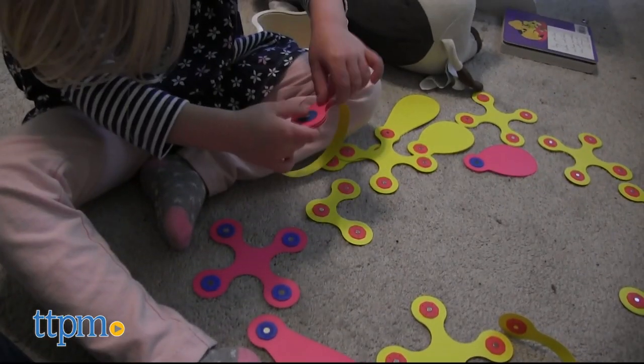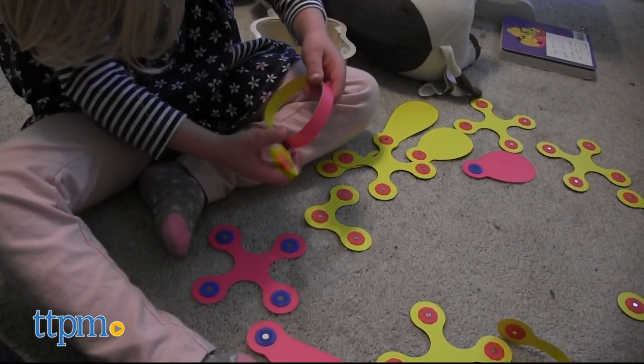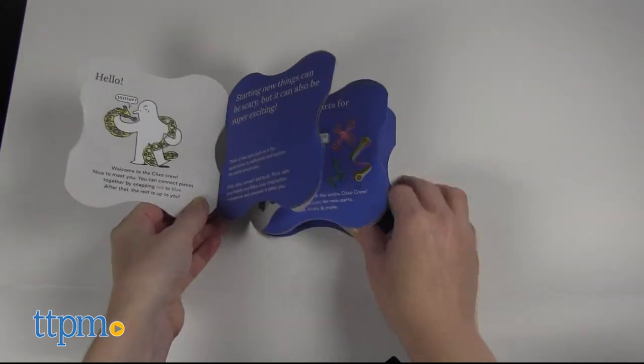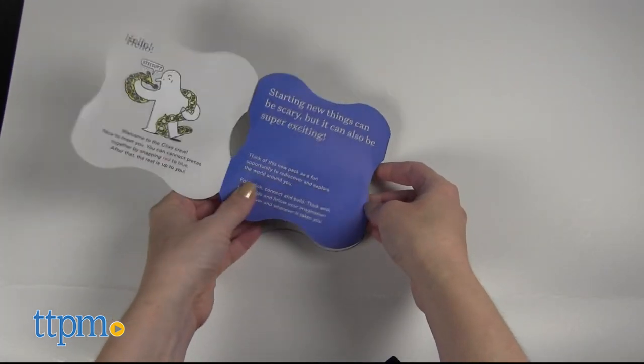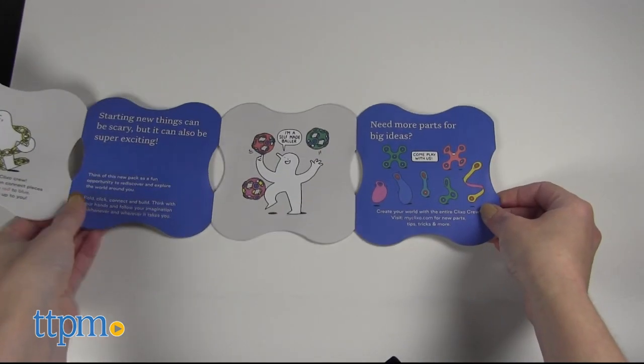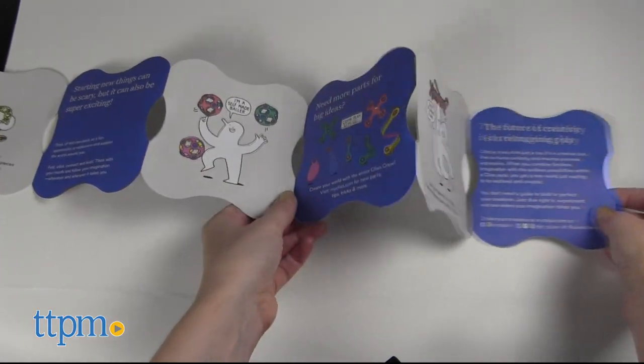And because the pieces are flexible it allows kids to build in 2D or 3D. You're encouraged to build whatever you want but the guide does provide picture instructions to build a ball, crown, snake, necklace, dragonfly, and helicopter.